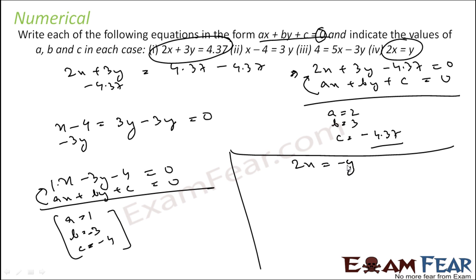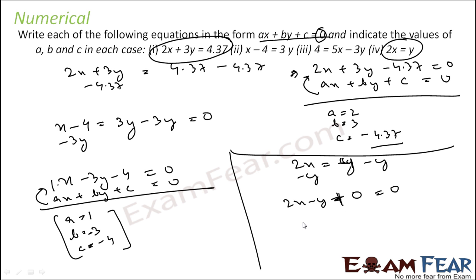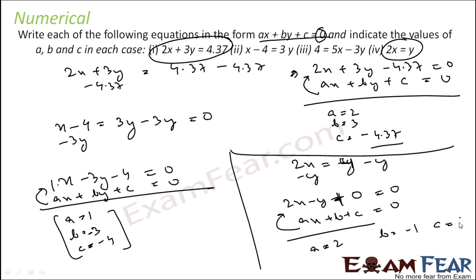For 2x equals y, subtract y from both sides to get 2x minus y equals 0, which can also be written as 2x minus y plus 0 equals 0. Comparing with the general form: a equals 2, b equals minus 1, and c equals 0.